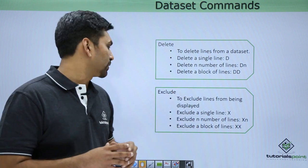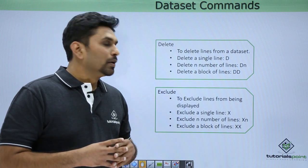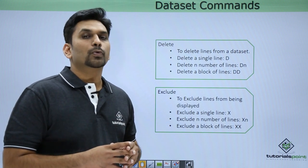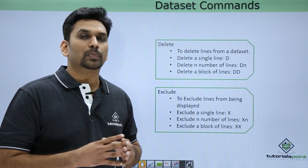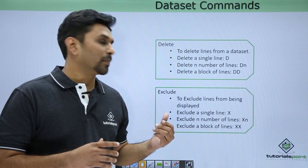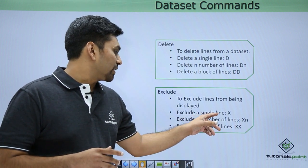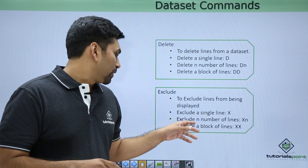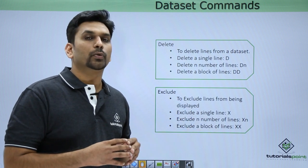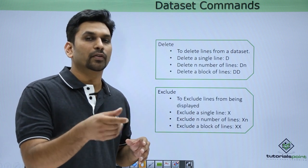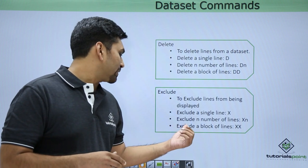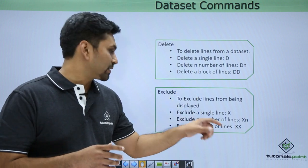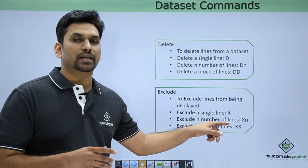The exclude command is used to exclude lines from being displayed. If you do not want to display some lines in a file, this can be done using the exclude command. For a single line, type X in the line number area. To exclude N number of lines, type X followed by a number like 5 or 10. To exclude a block of lines, type XX at the start and XX at the end, then hit Enter.